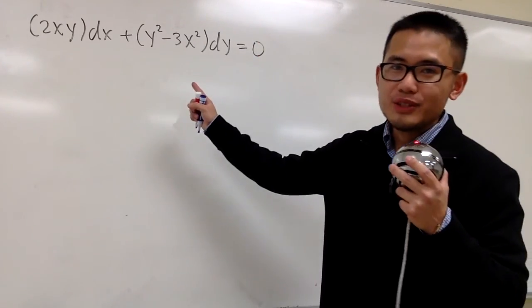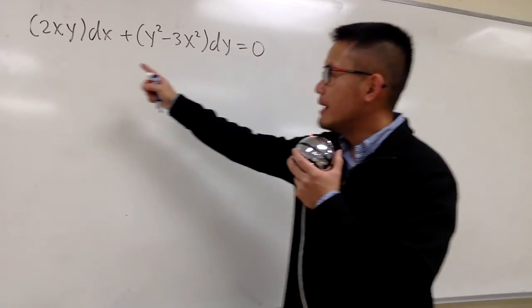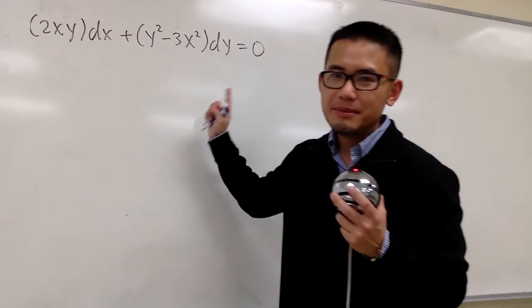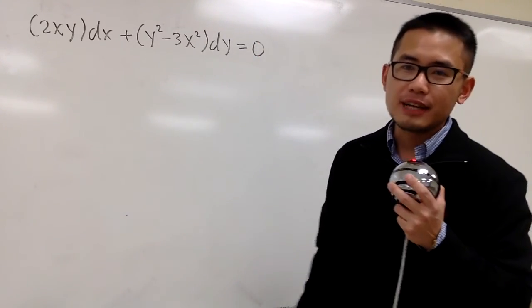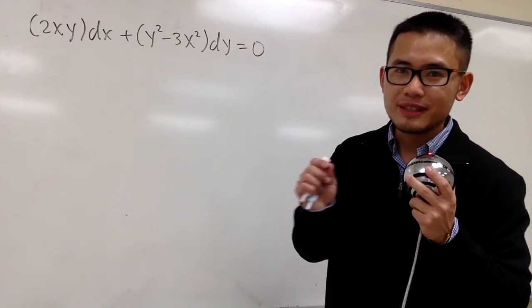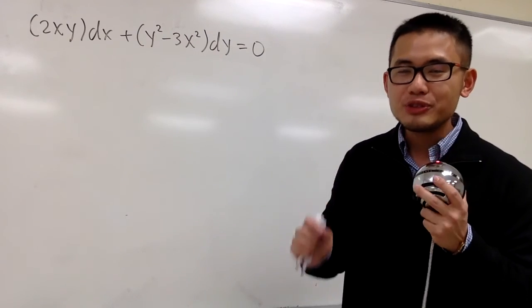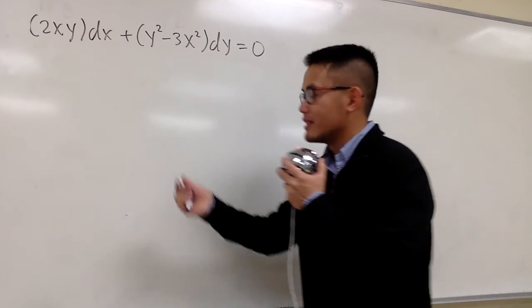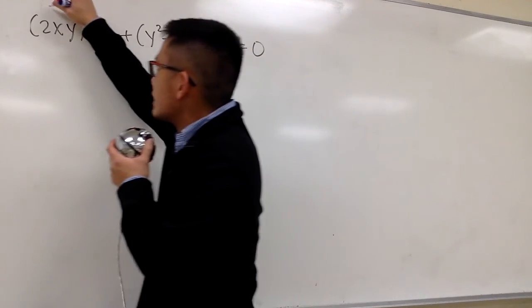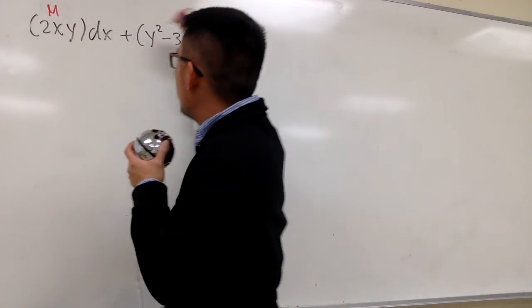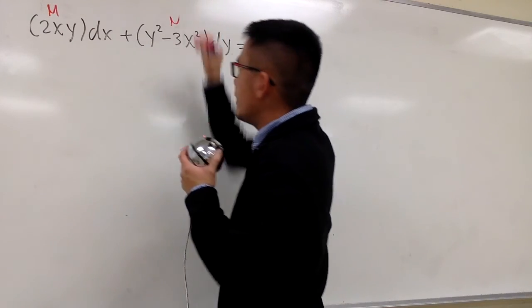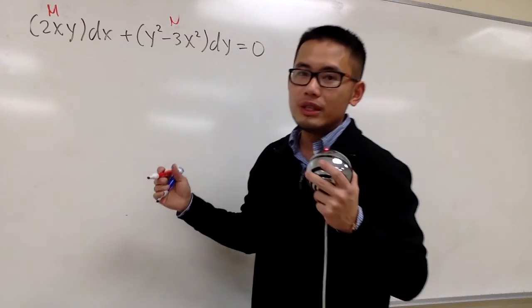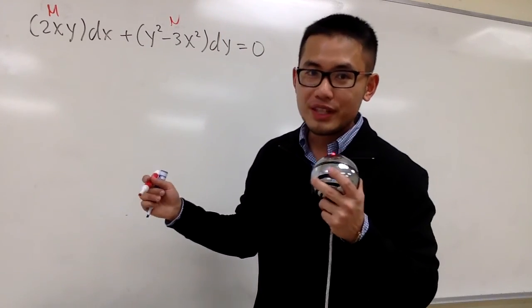Let's solve this differential equation. Based on the look, it seems like this is exact. So let's go ahead and make sure it is exact — let's do the check. We'll label this as M and label this as N, and we do the partial derivative.